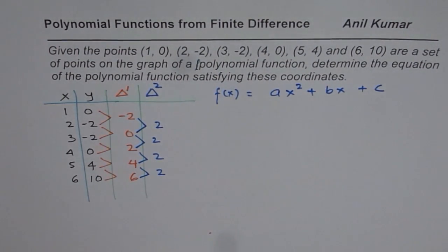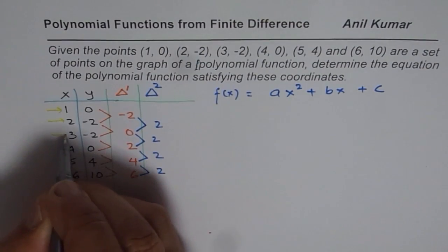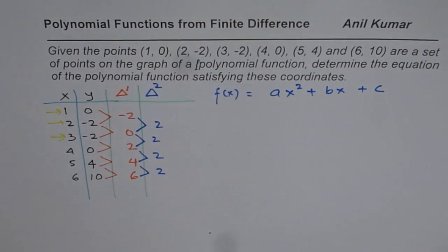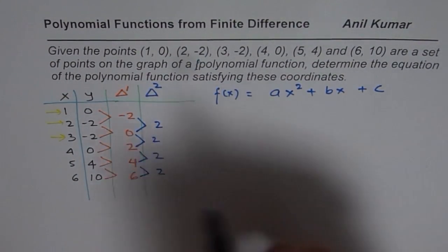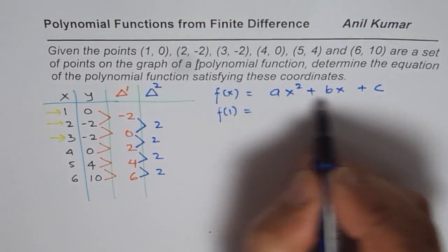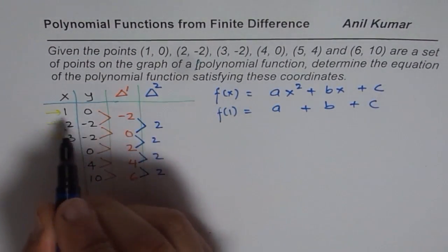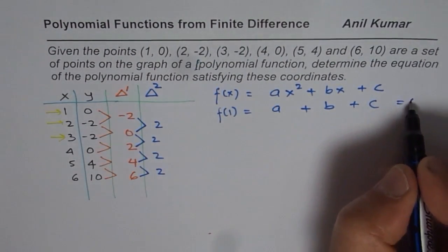So in general, how will you solve this? You will solve this using 3 equations. So you can use these 3 points. So once you have these 3 points, you will write your equations. You will say, well, f of 1 is equal to, substitute 1 here, so you get a plus b plus c, and at 1, the value is 0. So you get first equation.